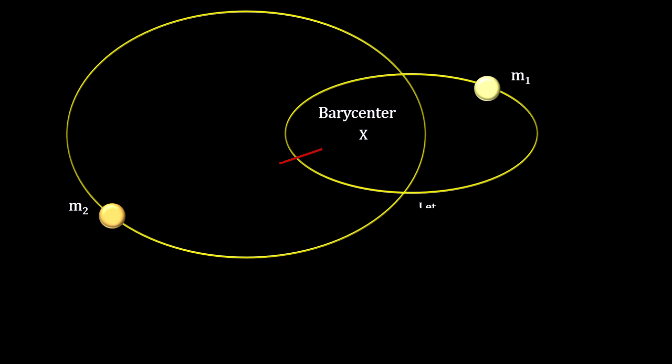These stars orbit the system's center of gravity, called the barycenter. We can observe the distance between the stars and locate the barycenter as the center of their elliptical motion. We can also observe the length of time it takes to make a full orbit, its period.